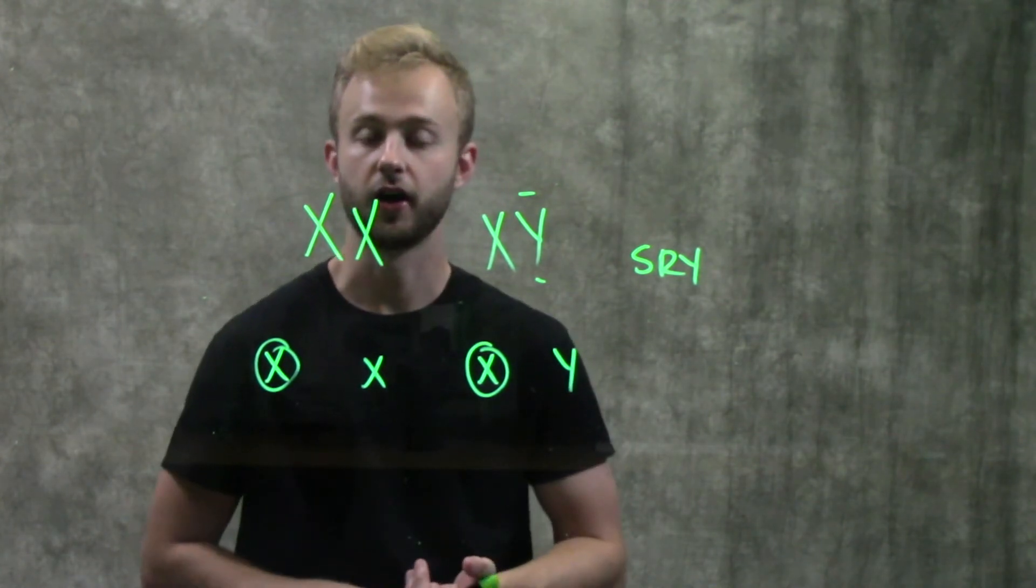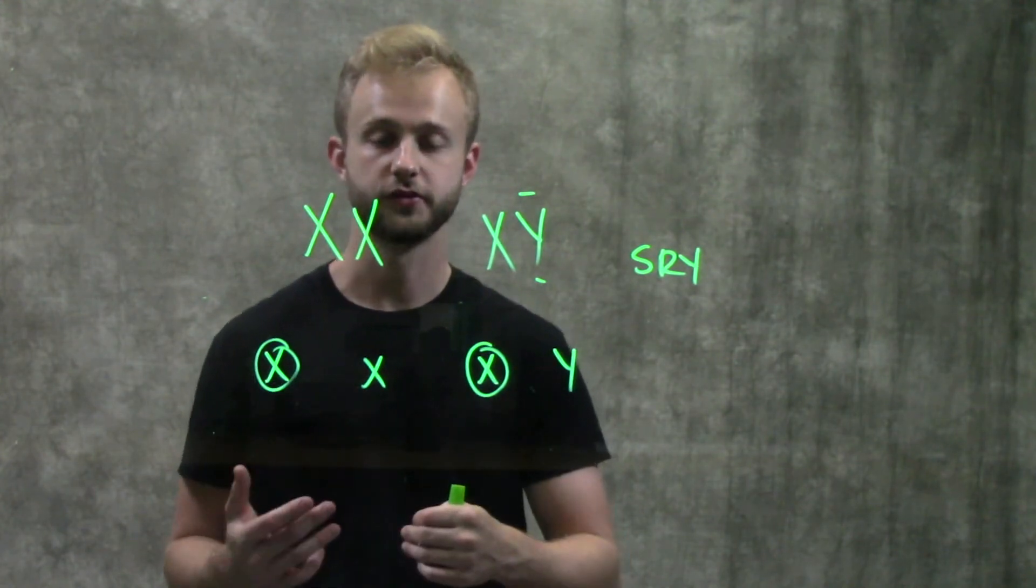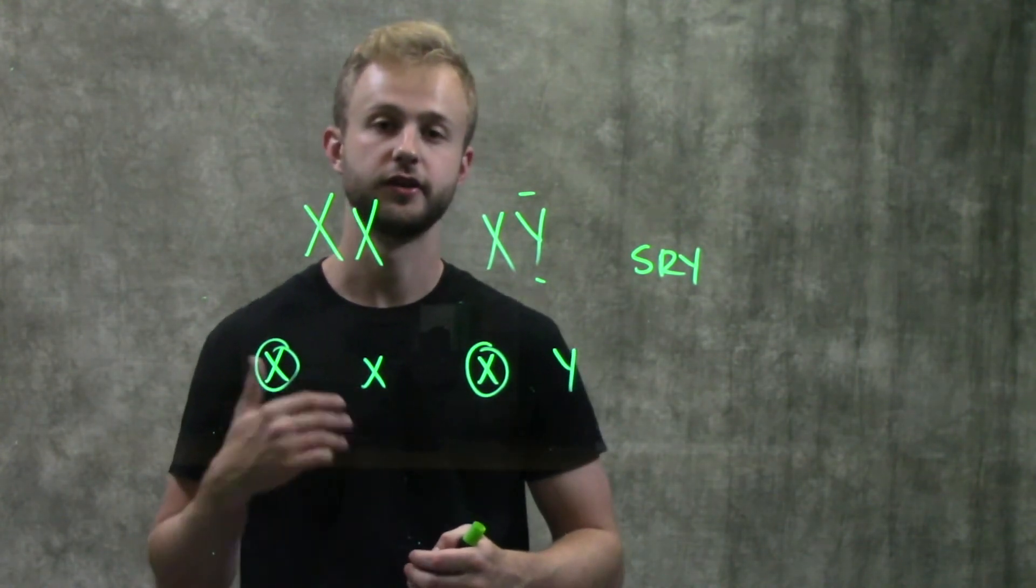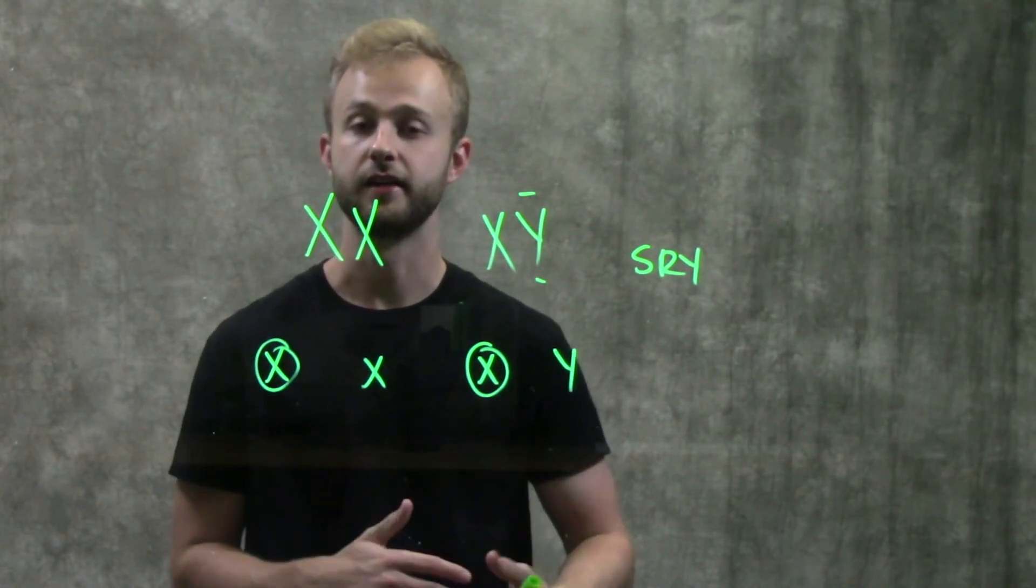Another example would be colorblindness. That's an X-linked gene, so it's on your X chromosome, and that's how it gets passed on from one generation to the next. We'll get into what that actually looks like in the next video.